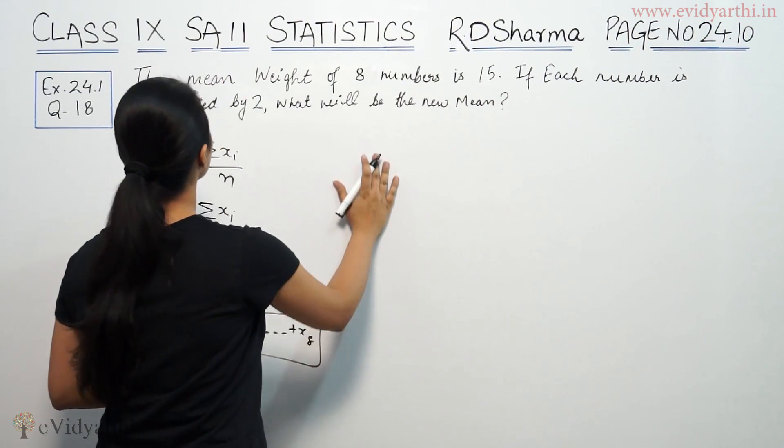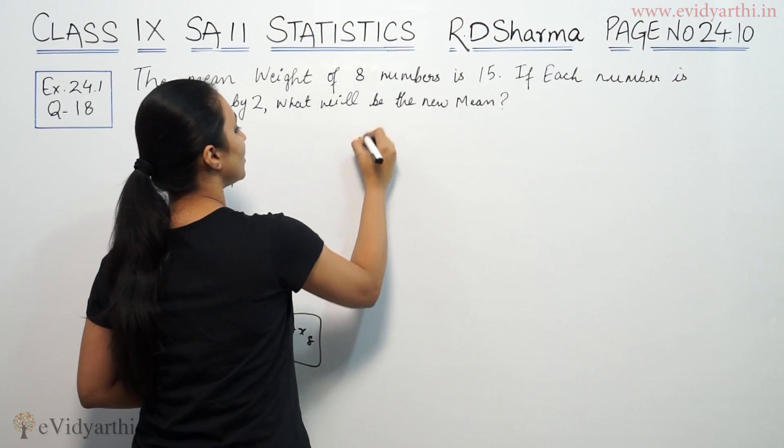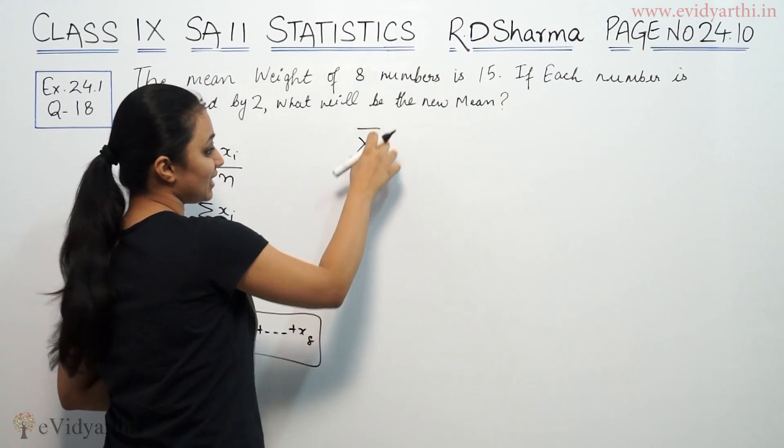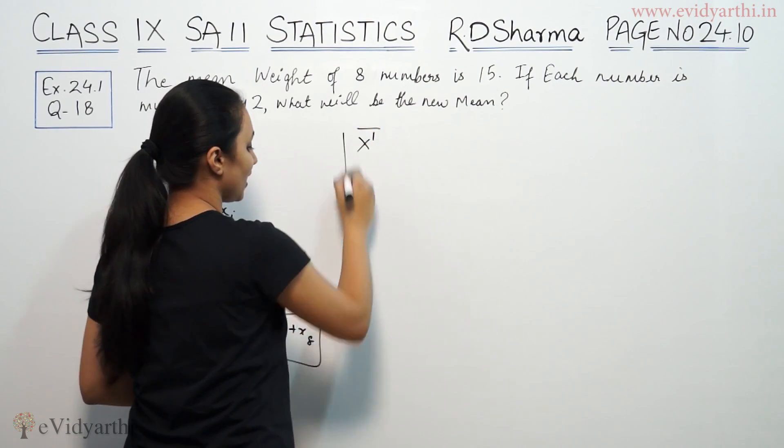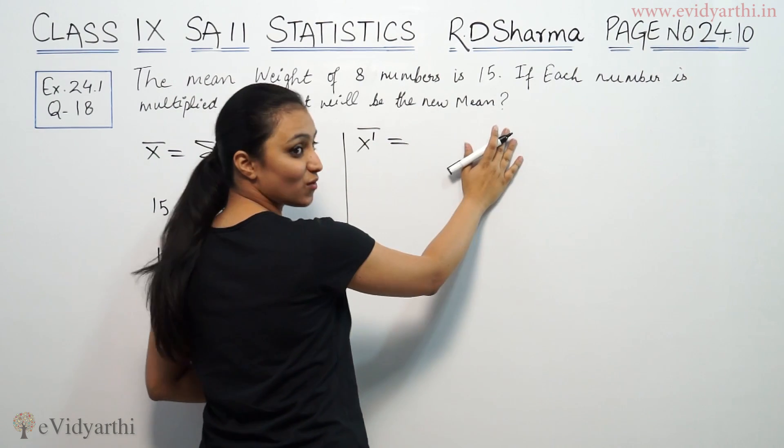Now, we will find the new mean if each term is multiplied by 2. So, new mean will be equal to sum of observations.